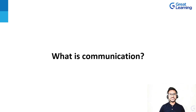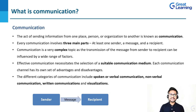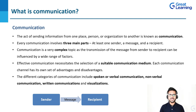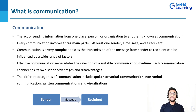So let's start with the definition of communication. As you can see on the screen, the act of sending information from one place, person, or organization to another is known as communication. Right now, I am talking to all of you — I am the sender of the information, you are the recipient, and whatever I am saying is the message. Every communication involves three main parts: at least one sender, a message, and a recipient. Sometimes the recipient can be an audience as well, as in a public speaking event. The main goal of any effective communication is that the message must be clear.